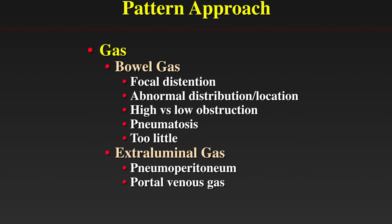Next, let's look at gas — both bowel gas and extraluminal gas. When evaluating the bowel, we need to determine if there is focal or diffuse distension, abnormal distribution or location of bowel, and whether patterns are associated with high or low intestinal obstruction. We also ask: is there pneumatosis, or is there too little gas present? Extraluminal gas includes both pneumoperitoneum and portal venous gas.